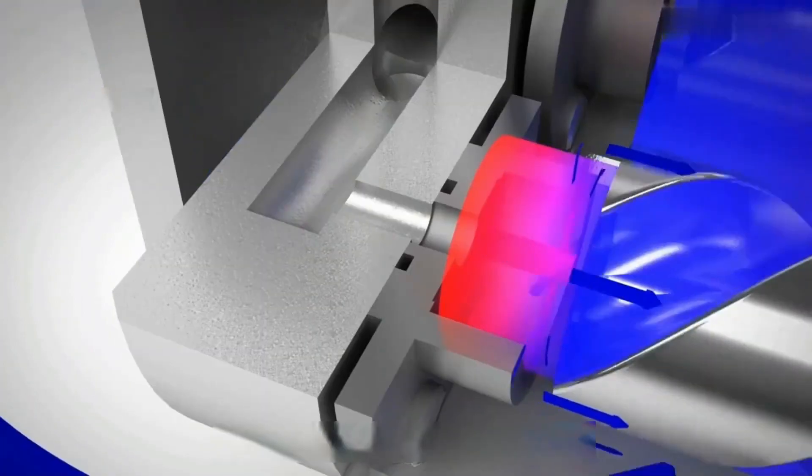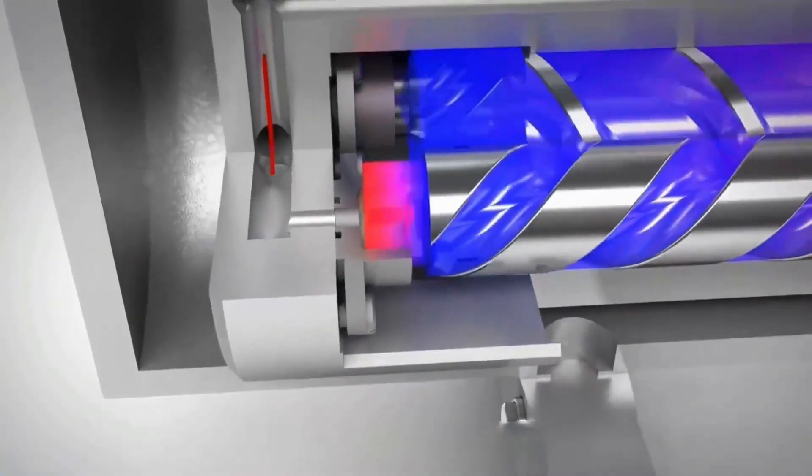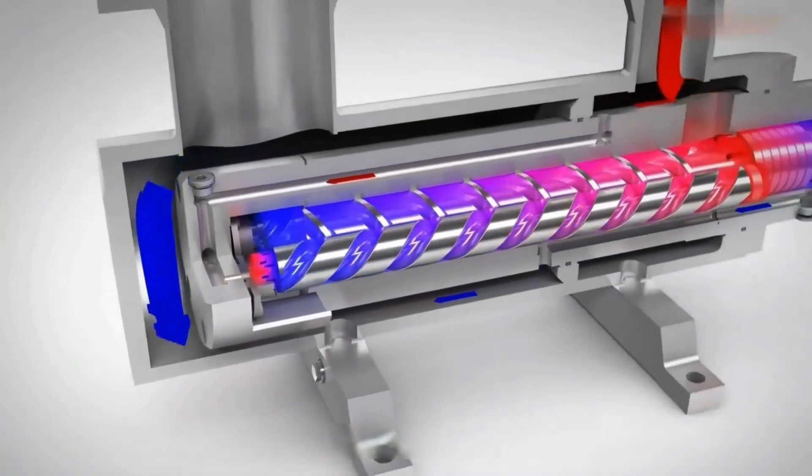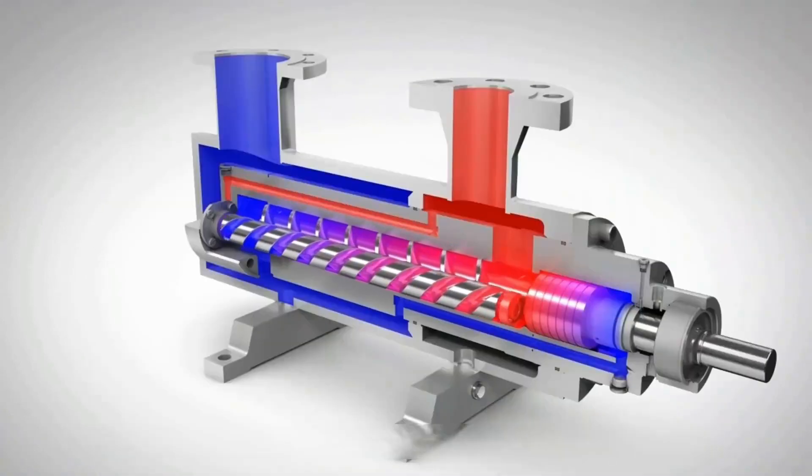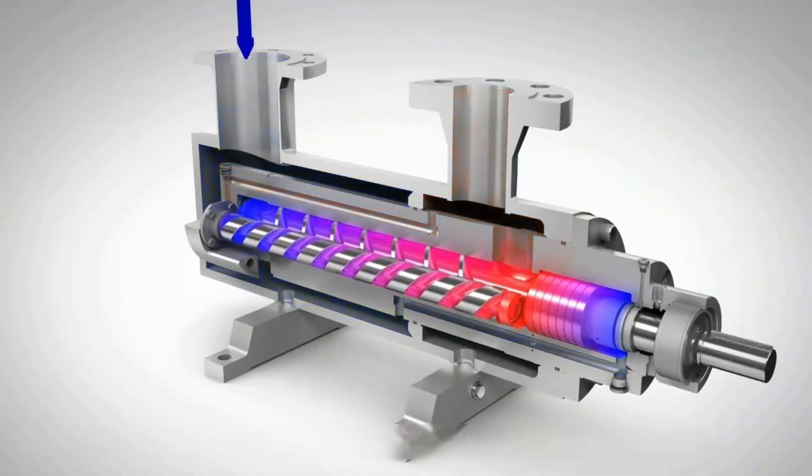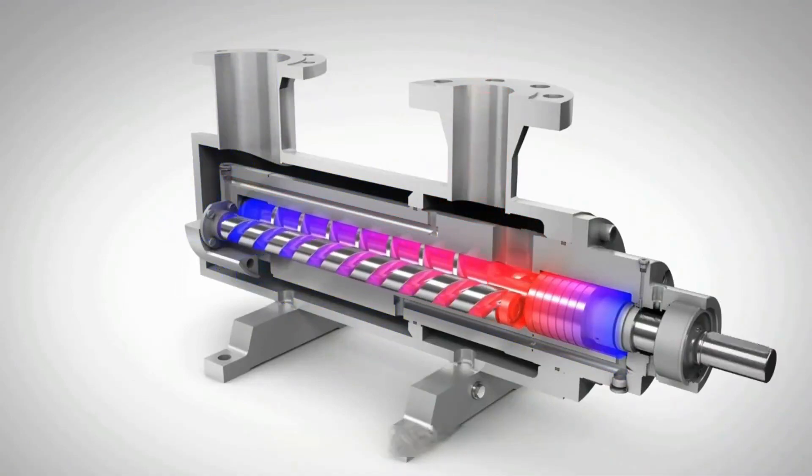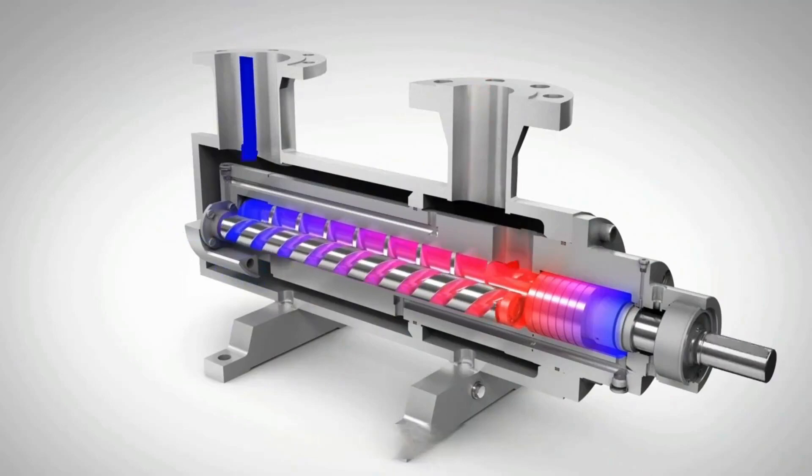The fluid is sucked into the sealed space between the threads and the pump casing and moves with the rotation of the screws. The volume of the fluid is gradually compressed, the pressure increases, and finally it is discharged from the outlet valve.